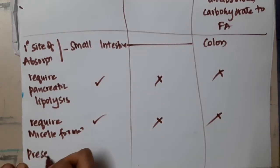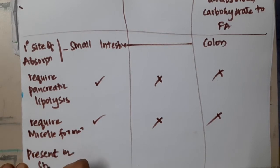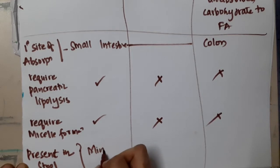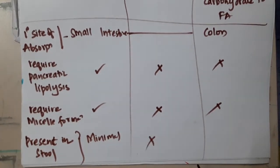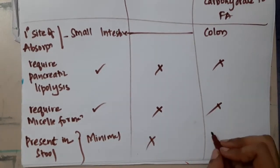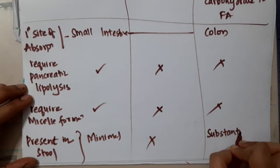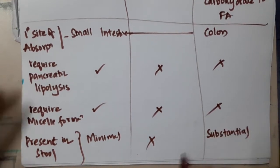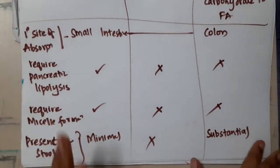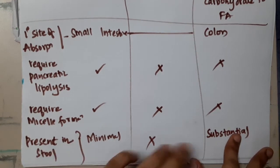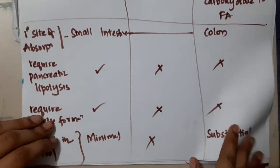Regarding presence in stool: long chain fatty acids are minimally present in stool, medium chain fatty acids are not present in stool, whereas short chain fatty acids are substantially present in stool. These are the key differences between long chain, medium chain, and short chain fatty acids.